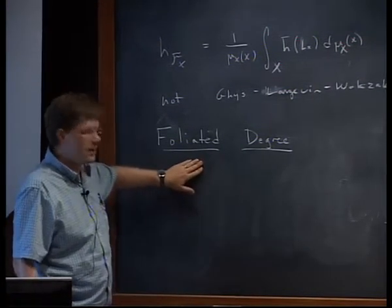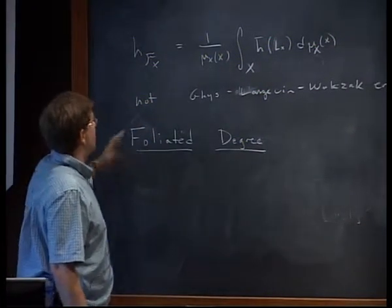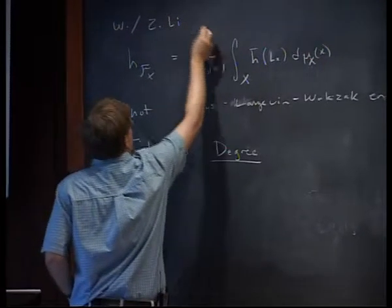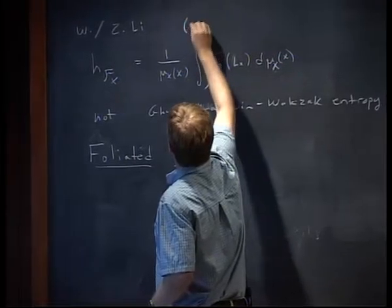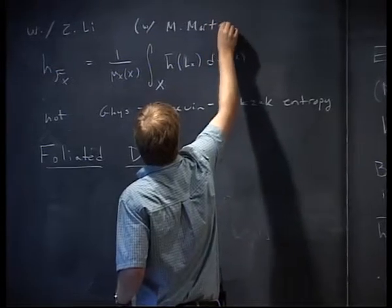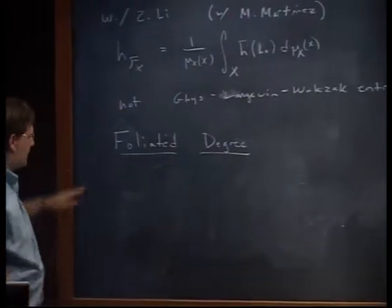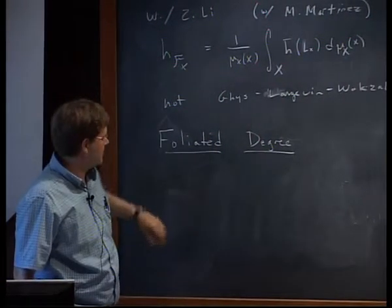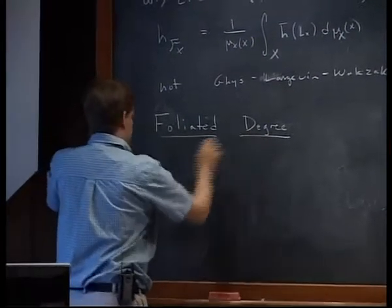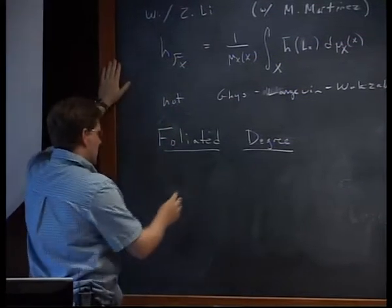Steve Hurder has some things where he talks about it, and a few other cases that we found. By the way, this is all work with Zhenyu Li. The foliated degree is a notion which is not an integer, but it's built to be a topological homotopy invariant, leaf-wise. Here f should be a foliated continuous map between two foliated spaces — a foliation-preserving map, which just means you send leaf to leaf.